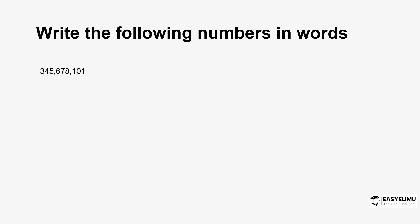What you do is group the numbers — the digits — in groups of three, starting from the farthest right end of the number. From the farthest end on the right, you group the numbers in groups of three. That's the first group of three, that is the second group of three, and that pattern is supposed to continue as long as we still have other digits.